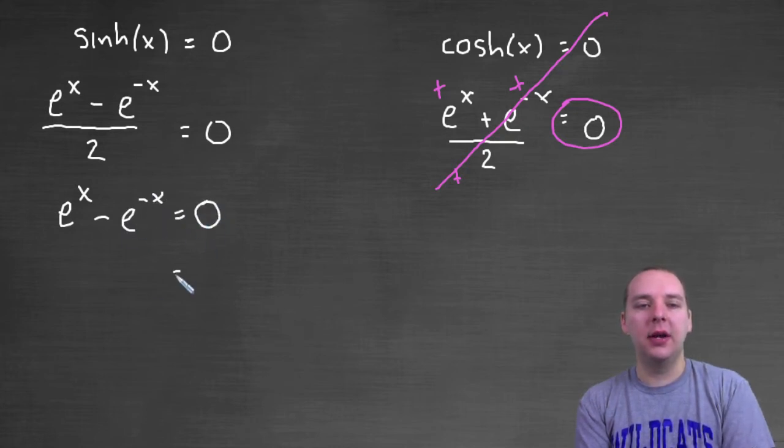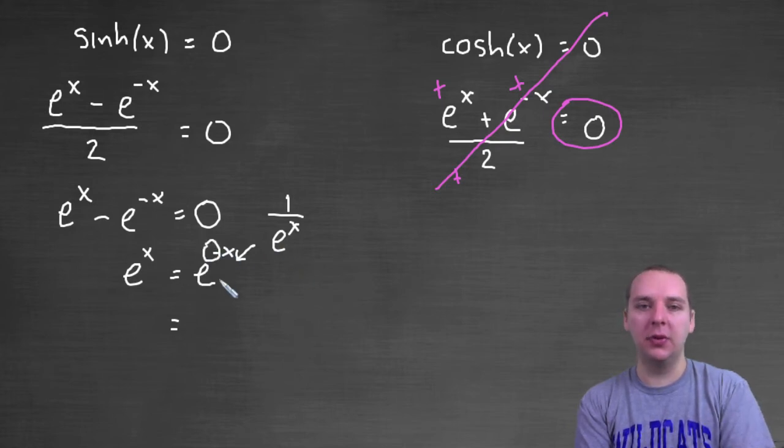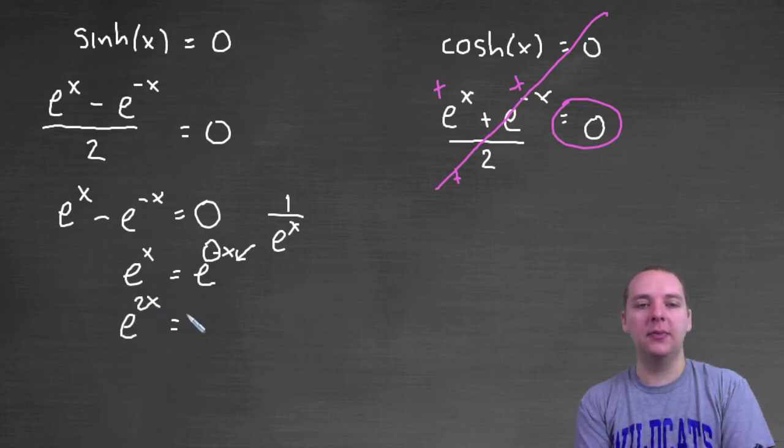We could add e to the negative x to the right hand side. We have e to the x equals e to the negative x, which is really one over e to the positive x. We could multiply that e to the x up to the left hand side and get e to the 2x equals one. When is e equal to one? When the exponent equals zero. If x was zero, two times zero is zero, e to the zero is one.